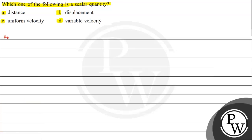The key concept is scalar and vector quantities. Scalar quantities are those which have magnitude only and not direction. Vector quantities are those which have magnitude plus direction as well.